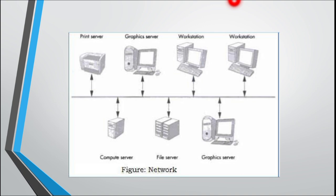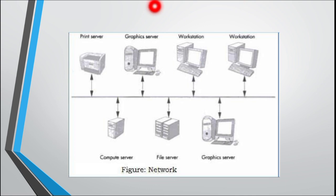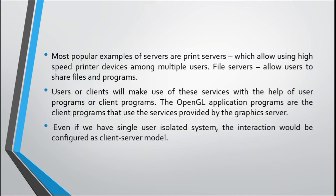One system can be a client and another can be a server. For example, I can send a request from a workstation to the print server to print a document. The print server processes it and sends the result back to the workstation. Clients and servers connected through a network can send and receive information.